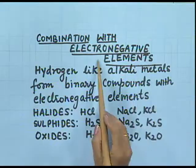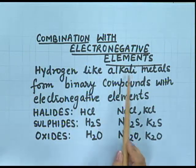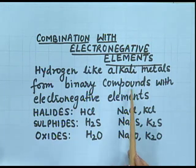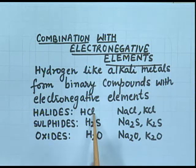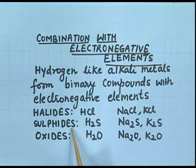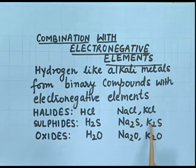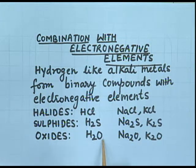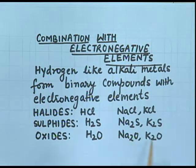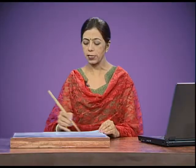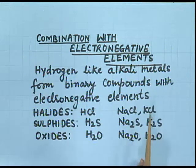Combination with electronegative elements: hydrogen, like alkali metals, forms binary compounds with electronegative elements. For halides: hydrogen forms hydrogen chloride, sodium forms sodium chloride, potassium forms potassium chloride. For sulfides: hydrogen forms hydrogen sulfide, sodium forms sodium sulfide, and potassium forms potassium sulfide. For oxides: hydrogen forms water with oxygen, and sodium and potassium also form similar types of oxides. Again, hydrogen is resembling the alkali metals.